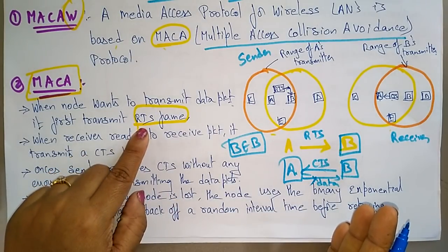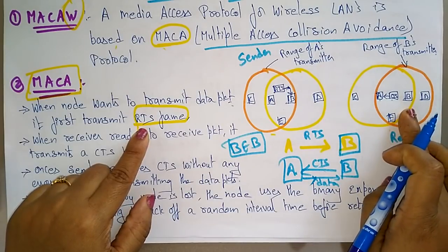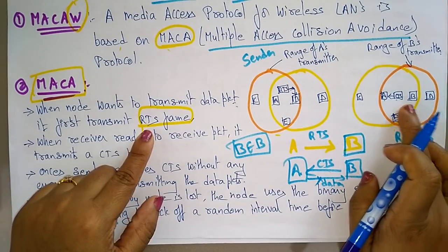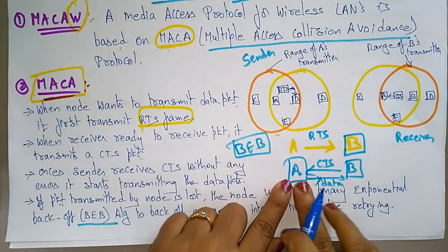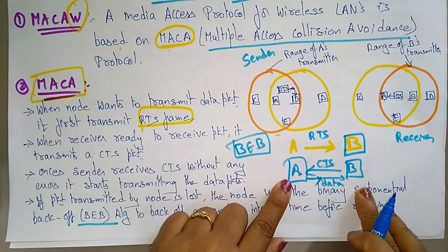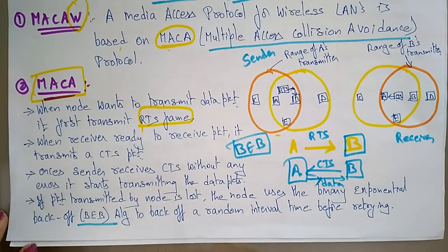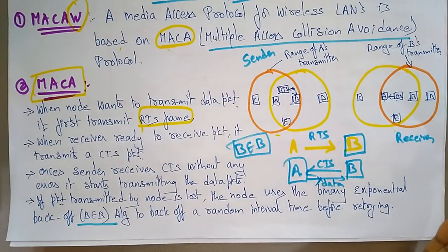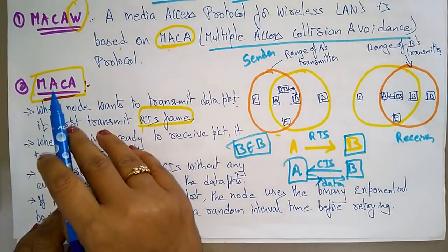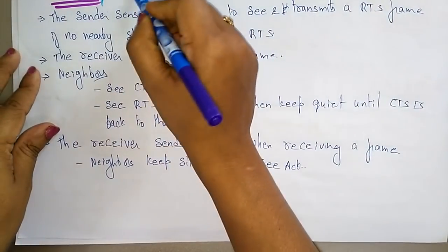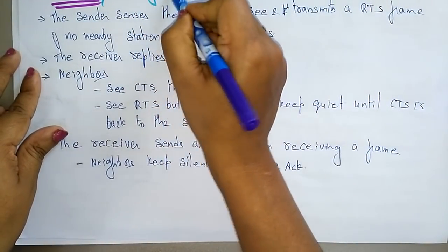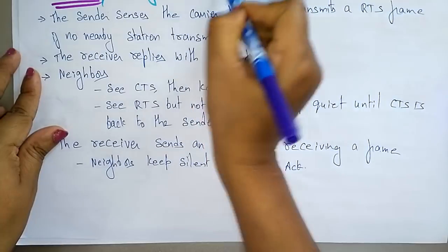To summarize MACA: whenever A wants to send a packet to B, it first sends a Request to Send. Whenever B is free and ready to receive, it sends Clear to Send back to A. Whenever A sees the CTS, it sends the data packet. With this communication pattern there is no collision — that's why we call it Multiple Access Collision Avoidance. Now let's see the MACAW protocol.